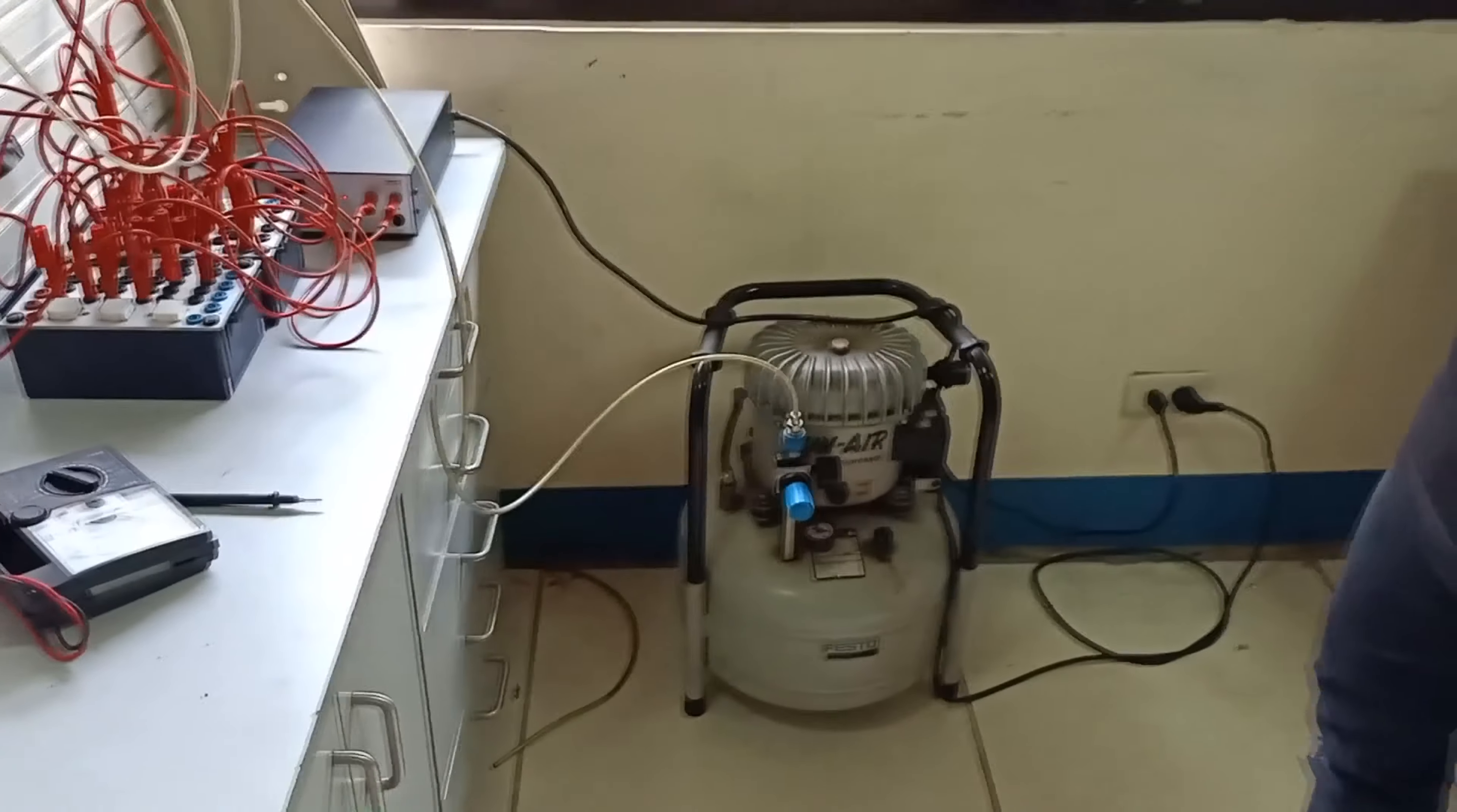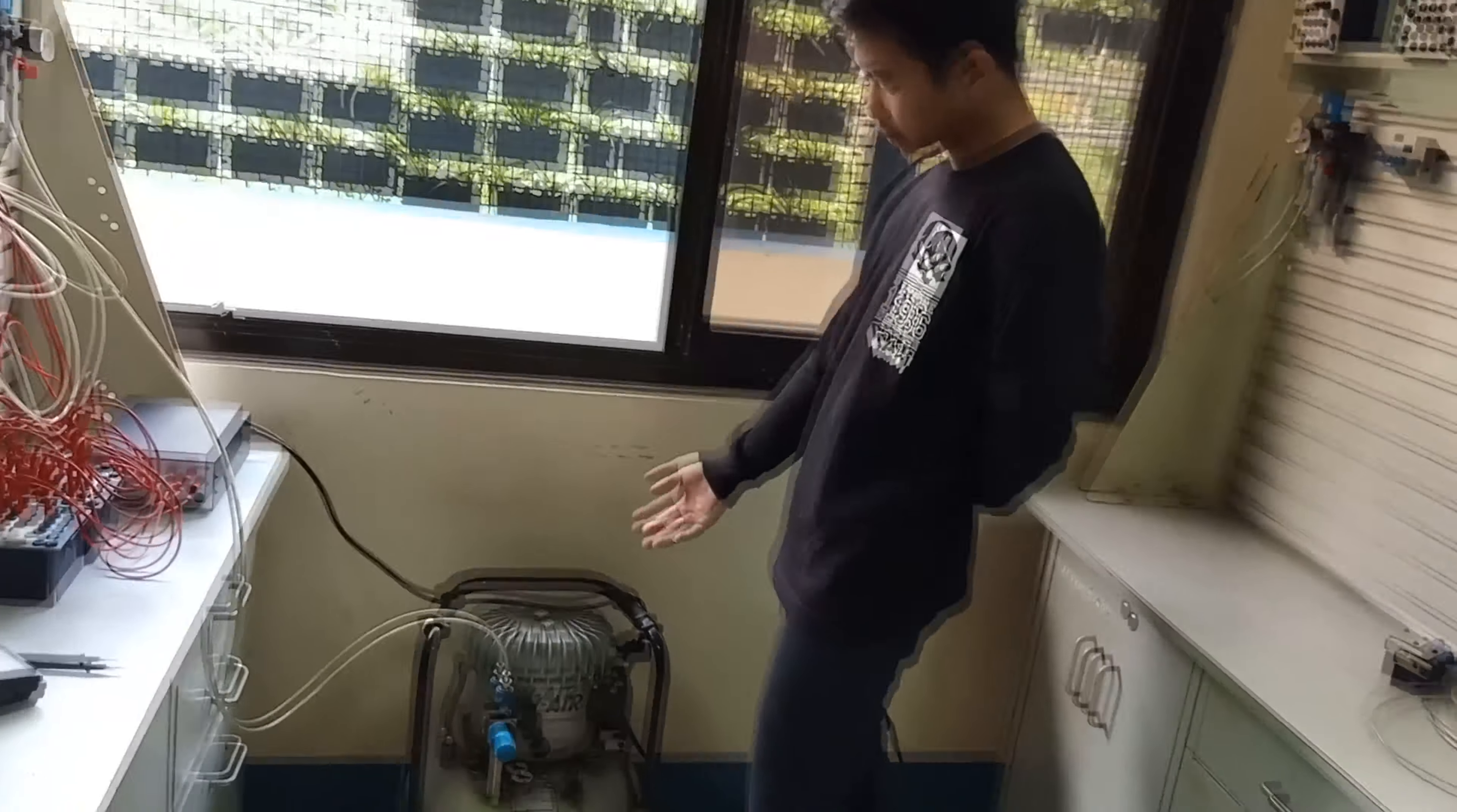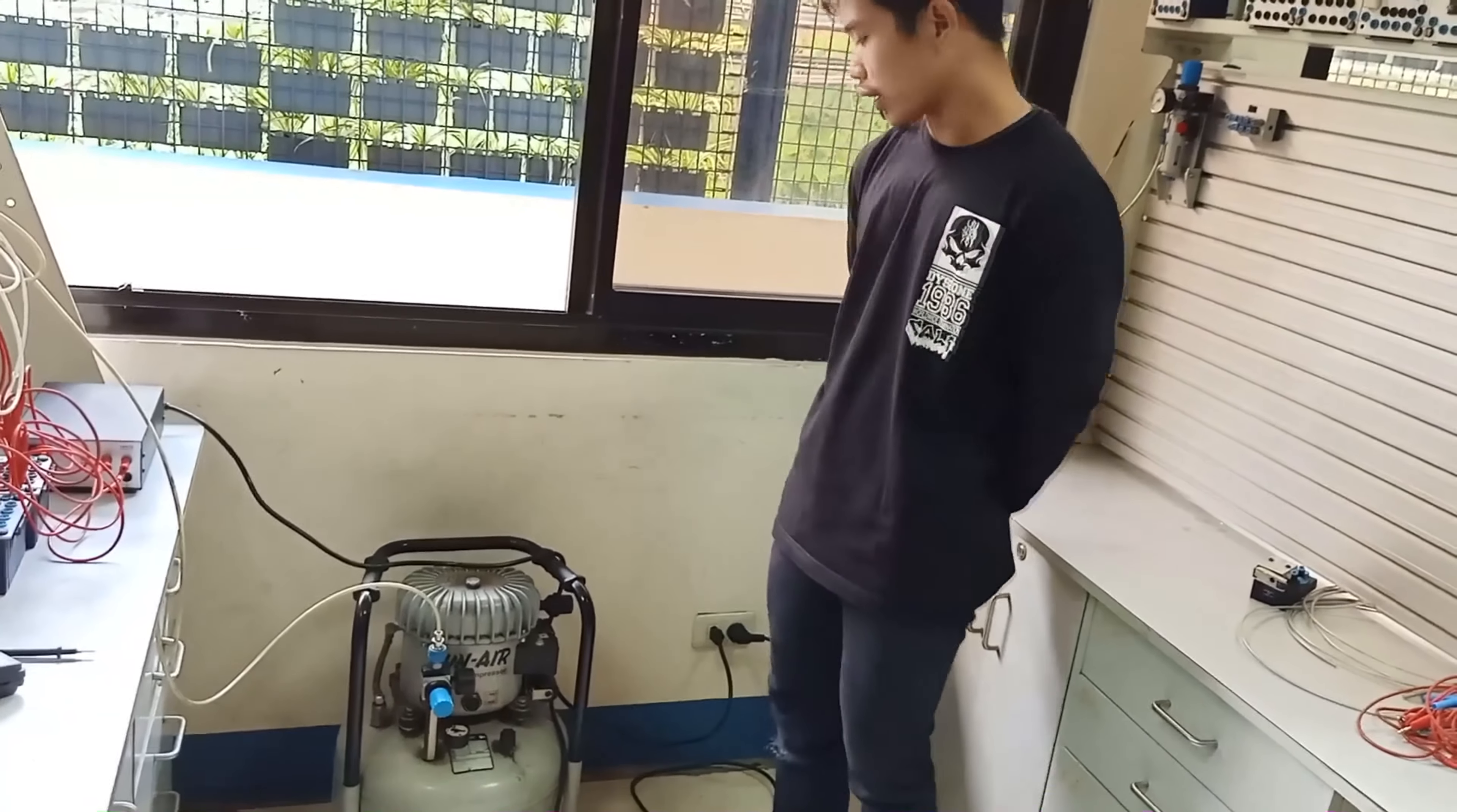The air compressor is automatically on and off because we have what we call the pressure switch. The purpose of the pressure switch is, once na na-abot na ng air compressor ang kanyang maximum pressure, it will automatically stop. And likewise, kapag bumaba naman yung pressure niya, or na-abot na yung kanyang minimum pressure, it will run again.